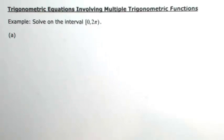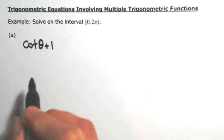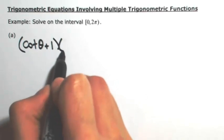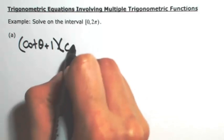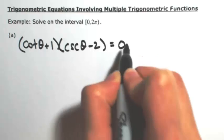For example, let's say we have the cotangent of theta plus 1, and this quantity is being multiplied by a second quantity of cosecant of theta minus 2, and their product equals 0.